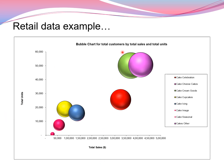Cake cream goods has the maximum number of customers by sales and by units. This is how you interpret a particular bubble size. I hope things are a bit clear in understanding the concept of generating a bubble chart in SAS software.